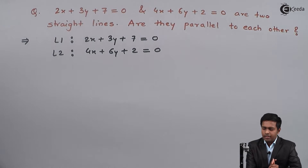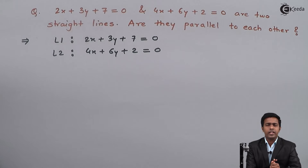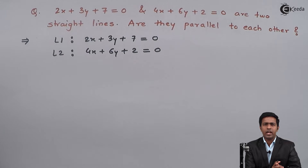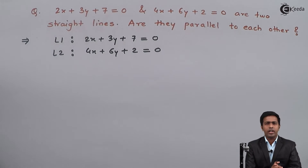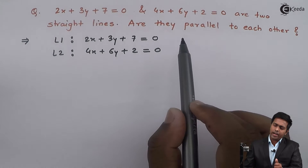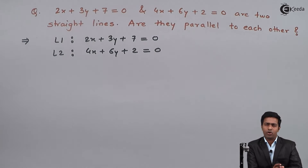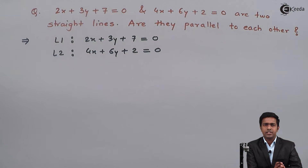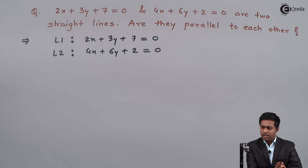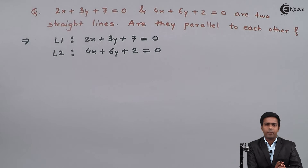To find out whether two lines are parallel to each other or not, we generally find out the slope of the lines. If the slopes of two lines are equal, then we say the two lines are parallel. So here, to find out whether these lines are parallel, we have to find out the slopes. If we get equal slopes, then yes, the lines are parallel; otherwise, they are not parallel.